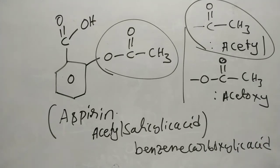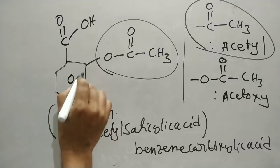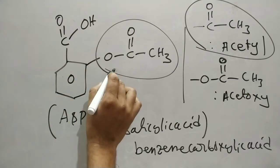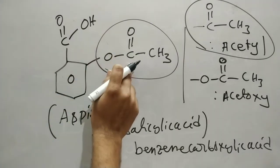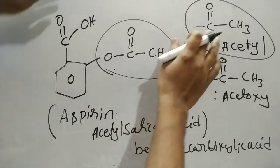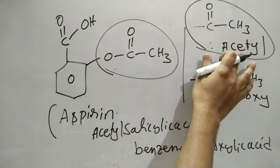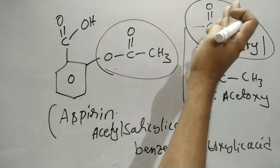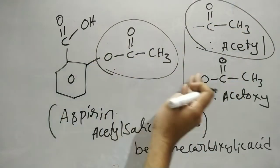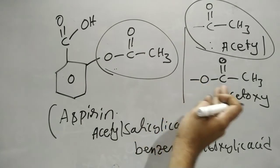At the second position on the ring, there is a group related to acetylsalicylic acid. The COCH3 is called an acetyl group, and this acetyl group is attached to the ring through an oxygen atom.